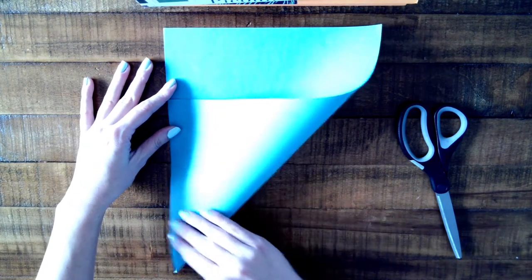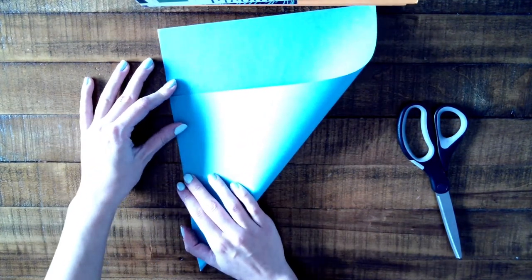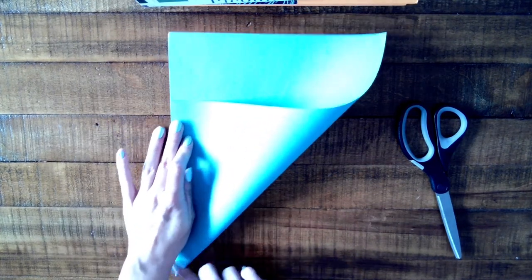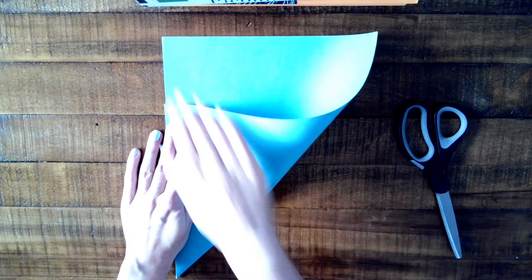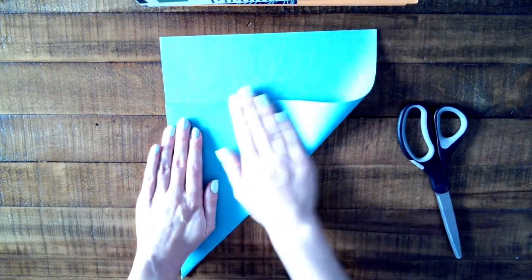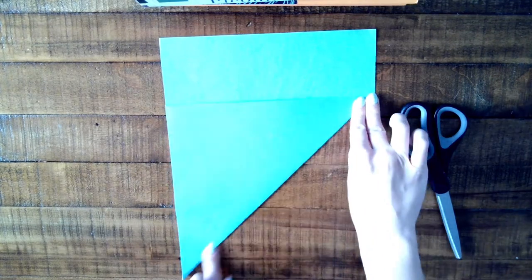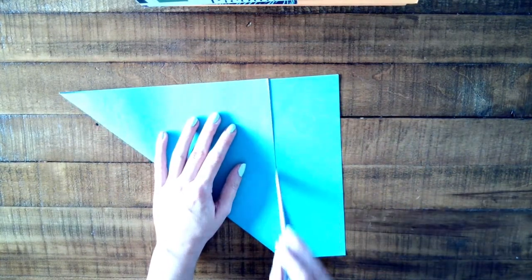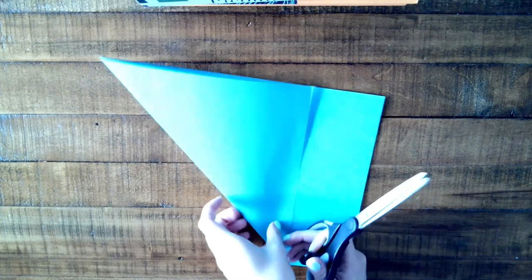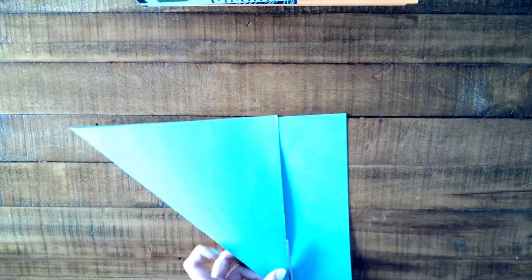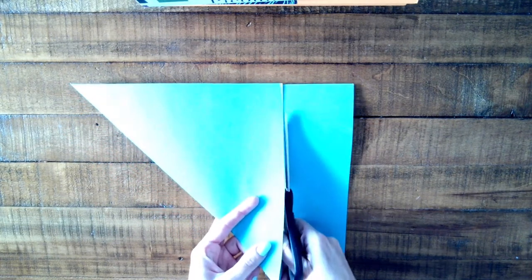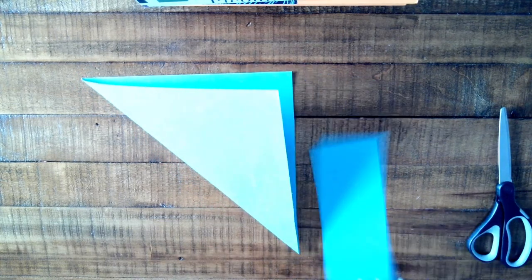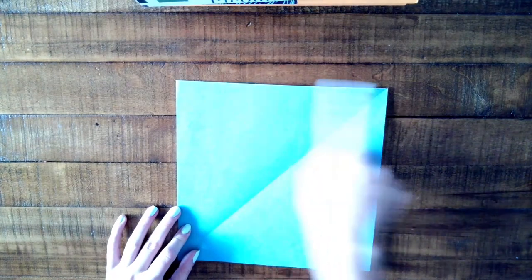To make any sort of origami, you need to start with a square sheet of paper. I have a rectangular piece of paper and you might as well, so I'm going to show you how to make it into a square. Take the bottom right corner of your paper and fold it to the top left side so you have a triangle. You should have a rectangular piece at the top that's just left over. You're going to cut along the top portion of your triangle so that extra rectangular piece of paper is no longer attached. Now you should have an even square with a diagonal line down the center.